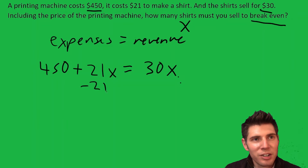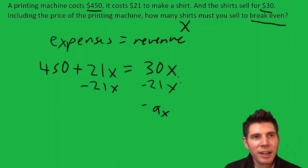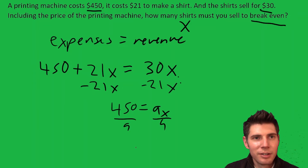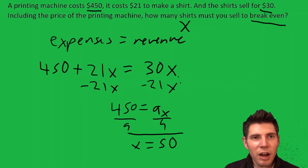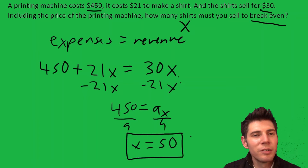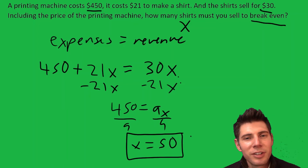Let's get the X's alone — minus 21X from both sides. We get 9X equals 450. Divide both sides by 9. We get X equals 50. So after you sell 50 shirts, you've broke even.